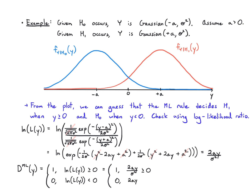We compare 2ay/σ² to zero for the ML rule, but 2a/σ² is just a positive constant, so it's equivalent to simply checking whether y is greater than or equal to zero or less than zero. This confirms what we got from the plot. It was okay to move a and σ² to the other side of the inequality because they're all positive, so it doesn't change the sign.